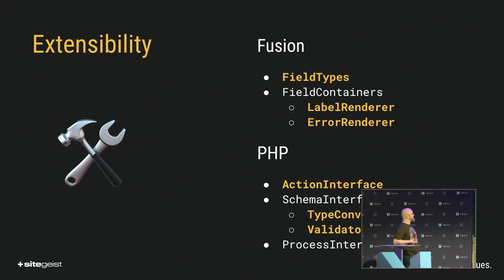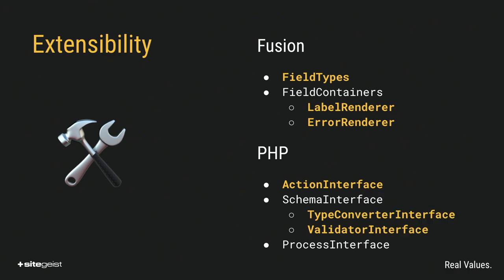There are multiple ways to extend Fusion forms. The most obvious one is to create custom field types using Fusion. A common way to extend Fusion forms is to replace the label renderer and the error renderer that are used inside the field containers. You will usually be able to use the default field container, but if the label renderer or the error rendering does not suit you, just replace it.